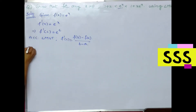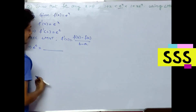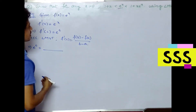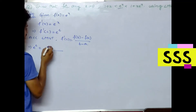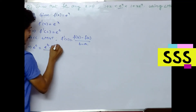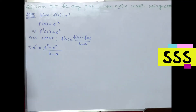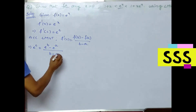So f'(c) equals f(b) minus f(a) divided by b minus a. f(b) is nothing but e^b, and f(a) is e^a, so f'(c) = (e^b − e^a) / (b − a). This is the first equation.